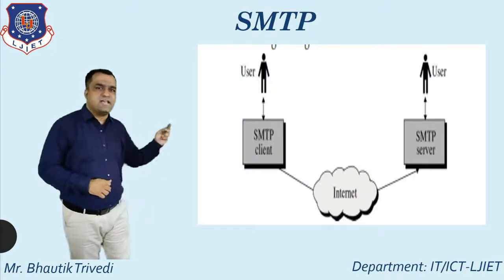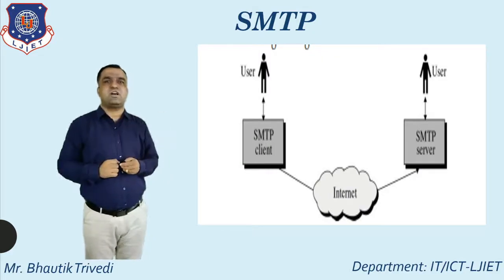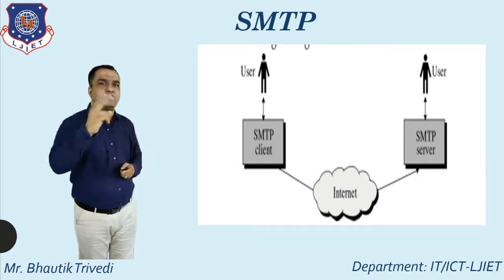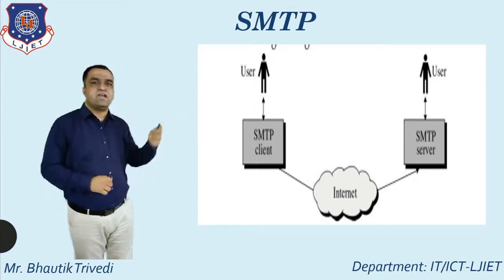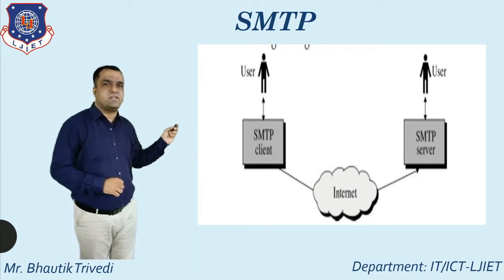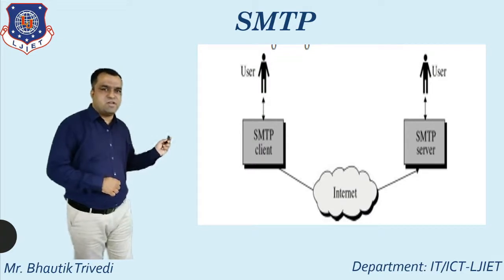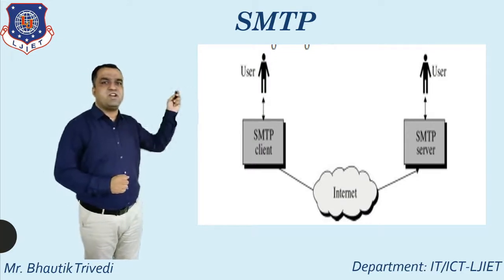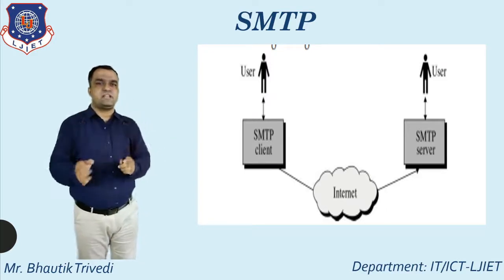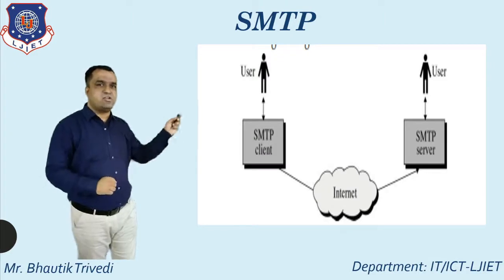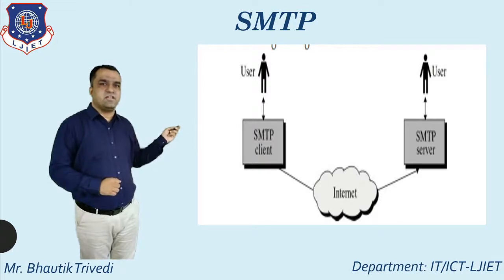The architecture of the SMTP protocol is generally supported by two compartments: the SMTP client and the SMTP server. In a typical setup, the SMTP client communicates through the internet to the SMTP server, with different users at each end. The SMTP architecture is divided into these two parts: SMTP client and SMTP server.